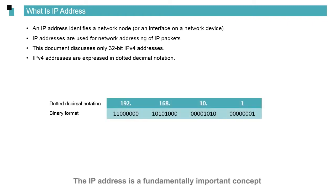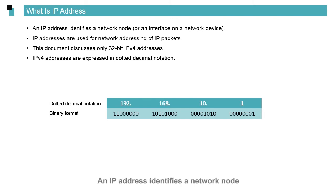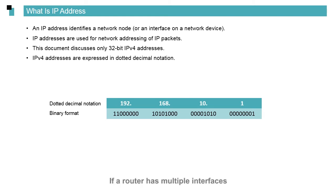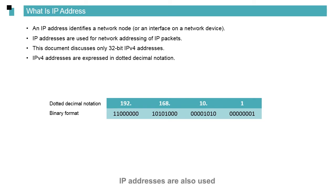The IP address is a fundamental concept to understand when discussing IP networks. An IP address identifies a network node or an interface on a network device. IP addresses are used for network communication. A host has at least one IP address. If a router has multiple interfaces, the router has the same number of IP addresses. Here, we only cover IPv4 addresses.